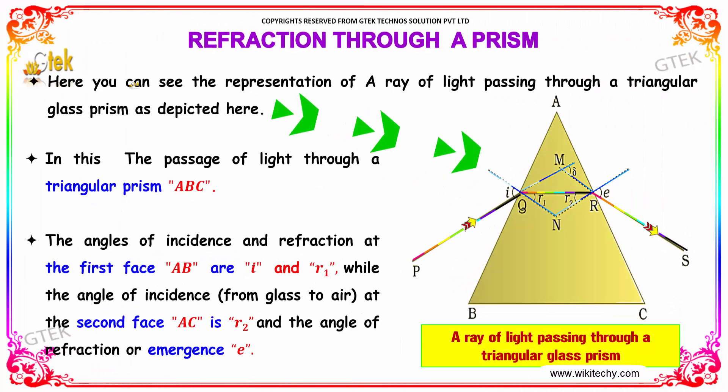Here I am trying to represent a ray of light passing through a triangular prism as shown here. In this, the passage of light through a triangular prism ABC, the angle of incidence and refraction at the first face AB are i and r1.